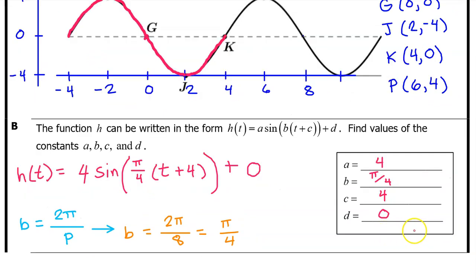On the AP exam, they will give you an answer box that you can use to record the values of A, B, C, and D like this, if you wish. Or, you may leave the answer box blank and record your answer as an expression for H of T with the values of A, B, C, and D filled in like this.